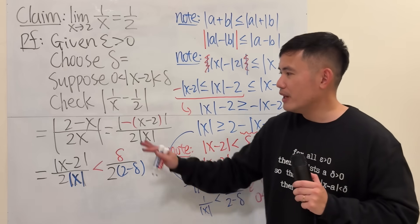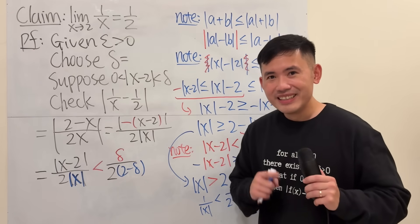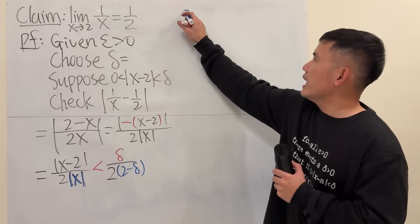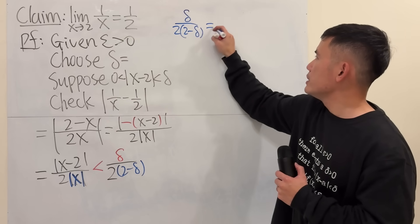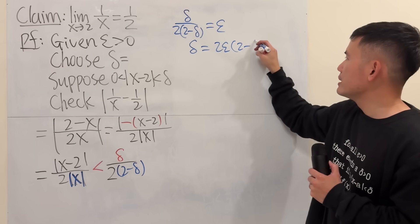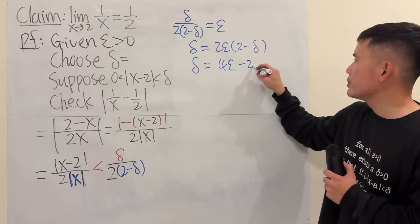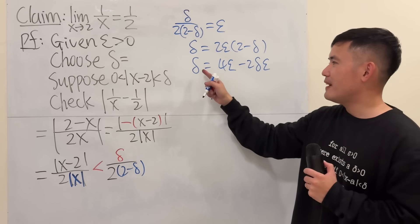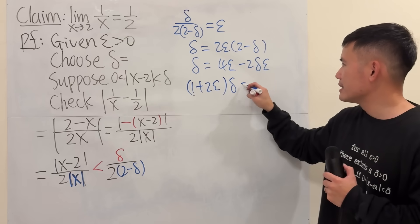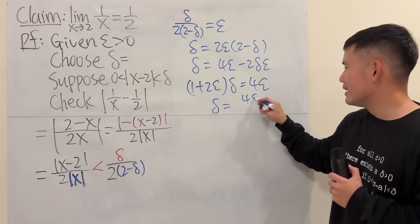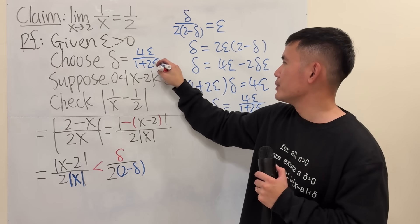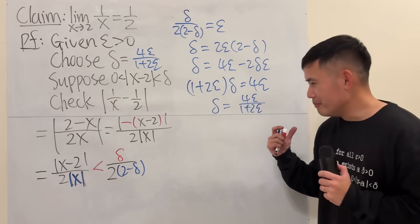At the end of the day we want this expression to equal epsilon, so set delta over (2 times (2 minus delta)) equal to epsilon and solve for delta. Multiply both sides by 2(2 minus delta): we get 2 epsilon times (2 minus delta), distribute to get 4 epsilon minus 2 delta epsilon. Move the delta terms to one side and factor: delta times (1 plus 2 epsilon) equals 4 epsilon. Dividing gives delta equals 4 epsilon over (1 plus 2 epsilon).